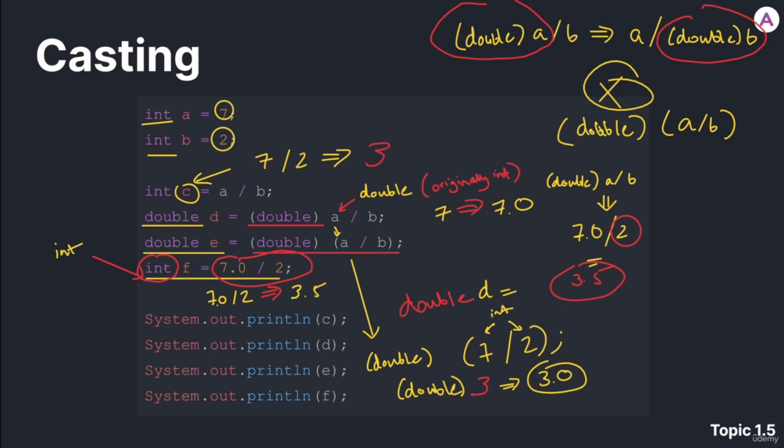So what we're basically doing in this declaration is int f equals, or assign the value of 3.5. Well, this program clearly has an error because we're trying to assign the value of a double to an integer. And that's not going to work.